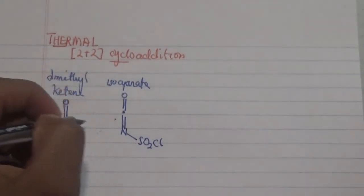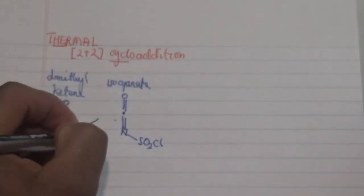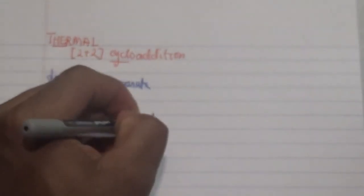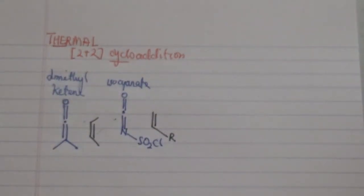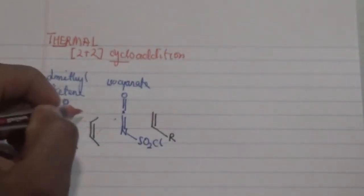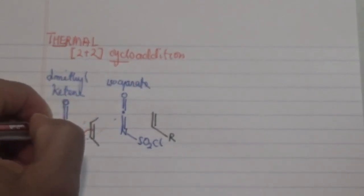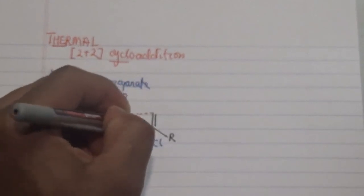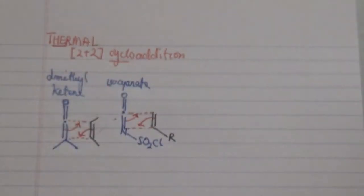For the dimethyl ketene, we can have a simple alkene reacting with it, and for the isocyanate we choose another alkene compound. When subjected to a thermal process, we have bonds forming — specifically, sigma bonds forming on both sides. You go from a double bond to a sigma bond in both cases.